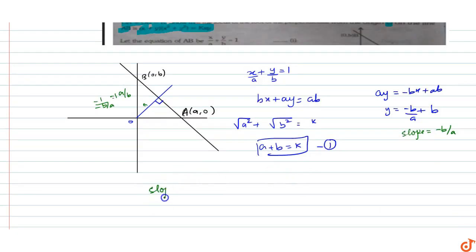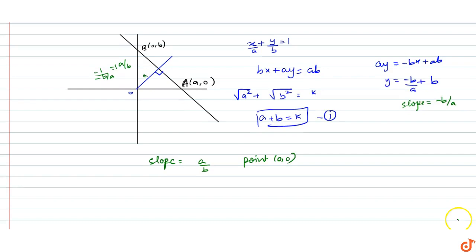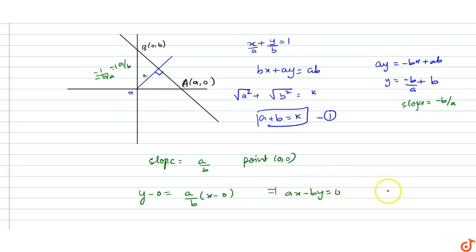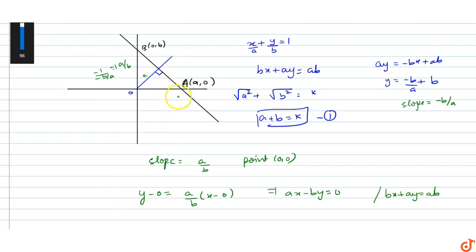The required perpendicular line has slope a/b and passes through point (0, 0). Using the slope-point form: y minus 0 equals a/b times (x minus 0), giving us ax minus by equals 0. We also have the equation of line AB: bx plus ay equals ab.